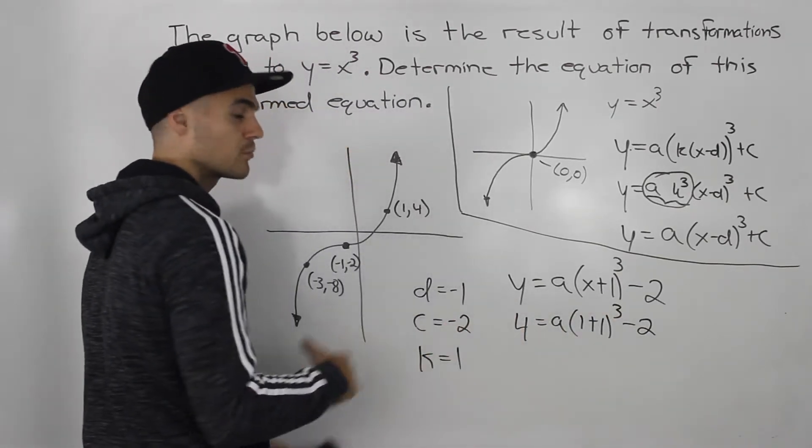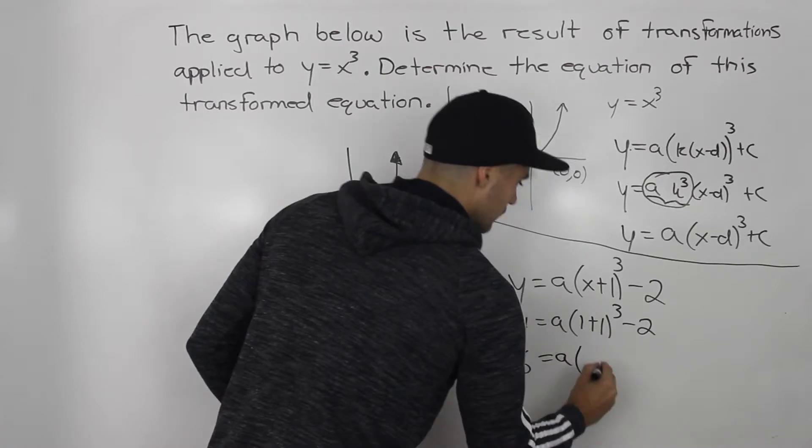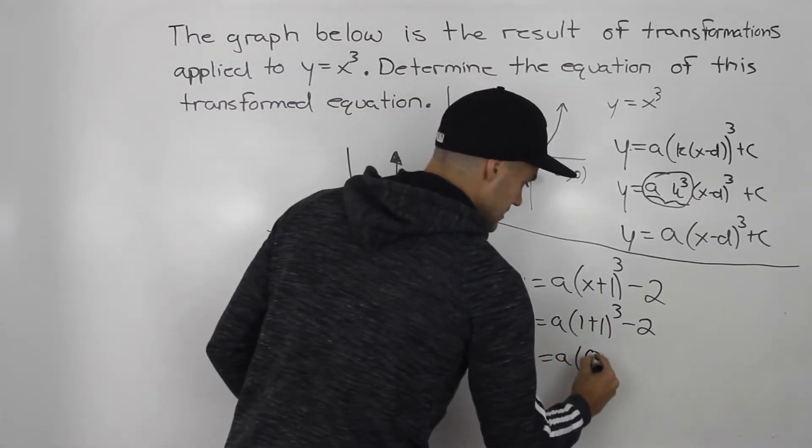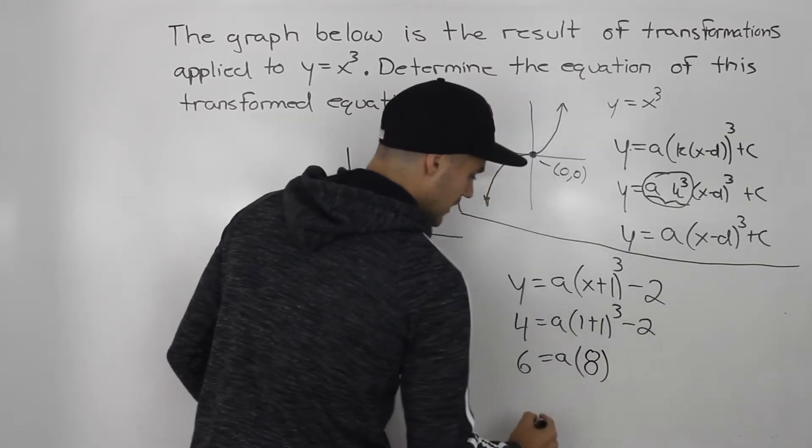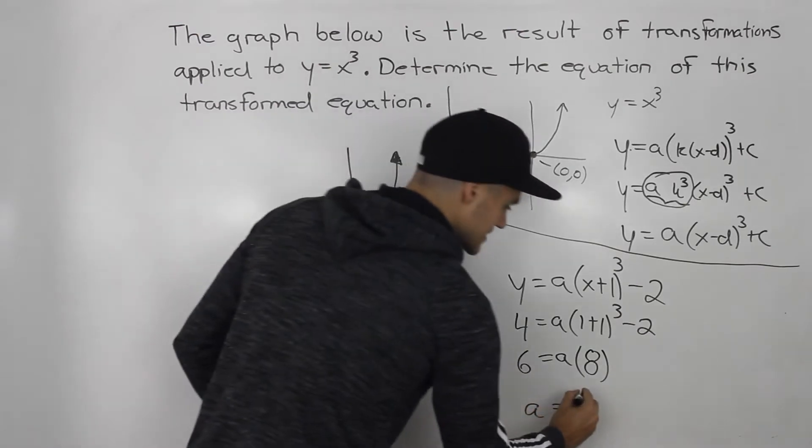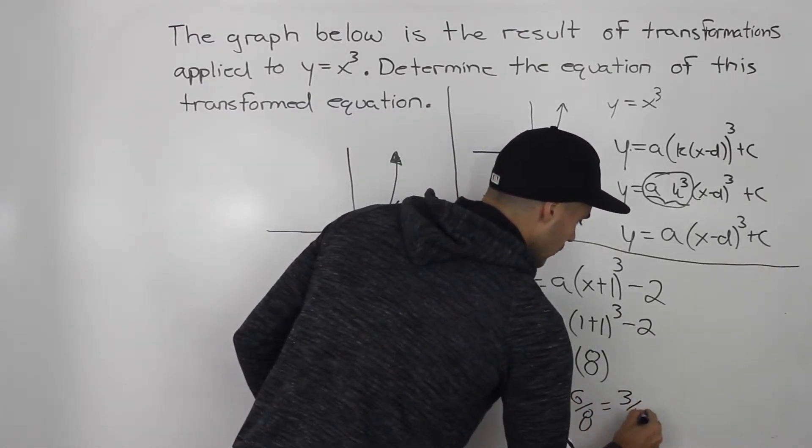So we could bring this negative 2 over. 4 plus 2 gives us 6. This a would be in front. 1 plus 1 is 2. 2 to the power of 3 is 8. And then dividing both sides by 8 to isolate for a, we would get 6 over 8 or 3 over 4.